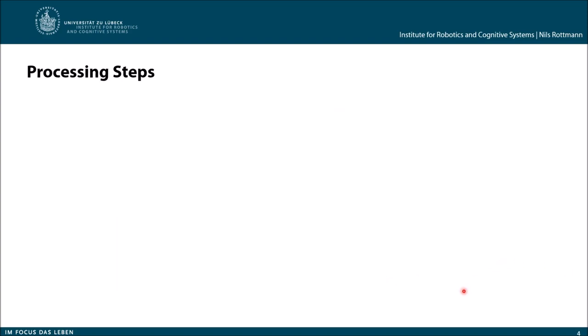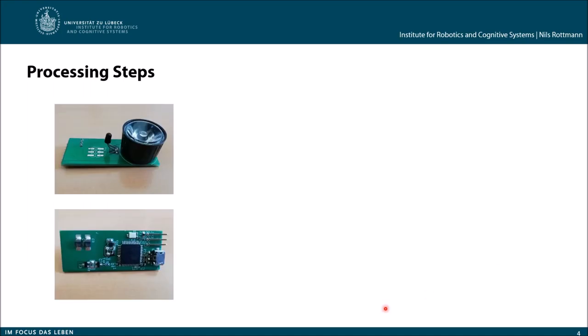Let's come to the processing steps for our sensor. Let's start by having a look at our sensor. As you can see here, this is a phototransistor and here is the LED. On the back side of our sensor we have the microprocessor, some resistors, and a USB panel which we can connect to our autonomous lawnmower.